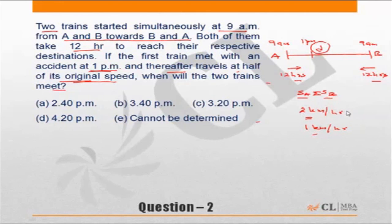So if the speed is 2 kilometers per hour and the time taken is 12 hours, that means the distance D equals 24 kilometers. So D is 24 kilometers, and originally the speeds are 2 kilometers per hour.